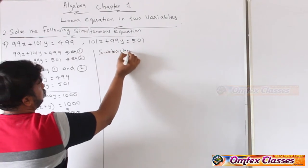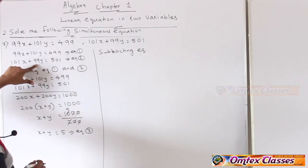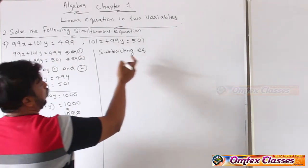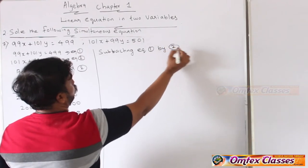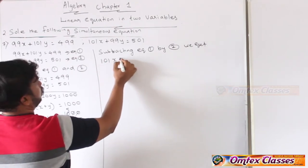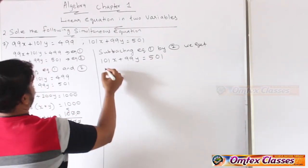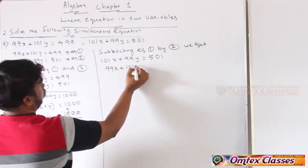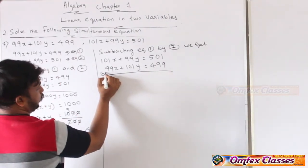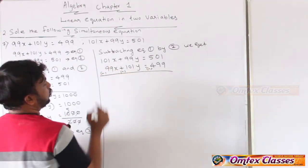अब rule के हिसाब से subtracting करेंगे। Subtract करते समय बड़ा नंबर ऊपर रखेंगे। Subtract equation 1 by 2: ऊपर लिखेंगे 101x plus 99y equal to 501, नीचे 99x plus 100y equal to 499. Sign change करना पड़ेगा। 101 में से 99 जाएगा तो 2 रहेगा।